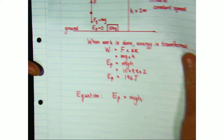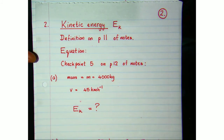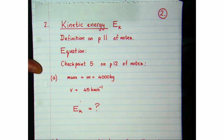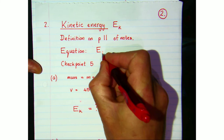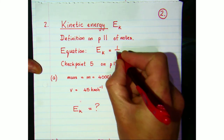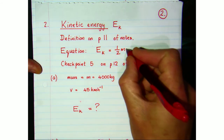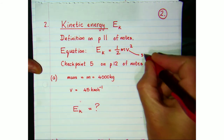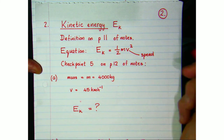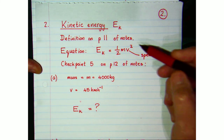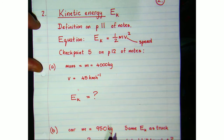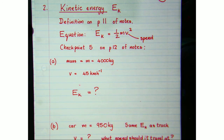Let's go on to kinetic energy — a different type of mechanical energy. If we derive the equation, it comes out as one half times the mass of the object multiplied by its speed squared: EK = ½mv². It's really important to realize this is speed. If you're given a velocity, you simply take the magnitude of that velocity. To test that equation we'll look at checkpoint 5 on page 12 of our notes.